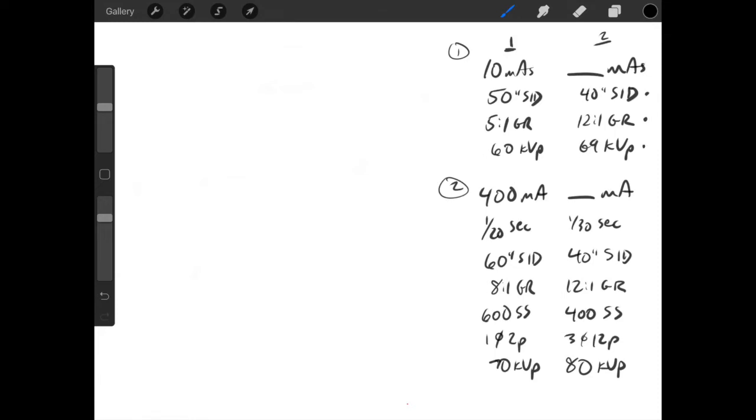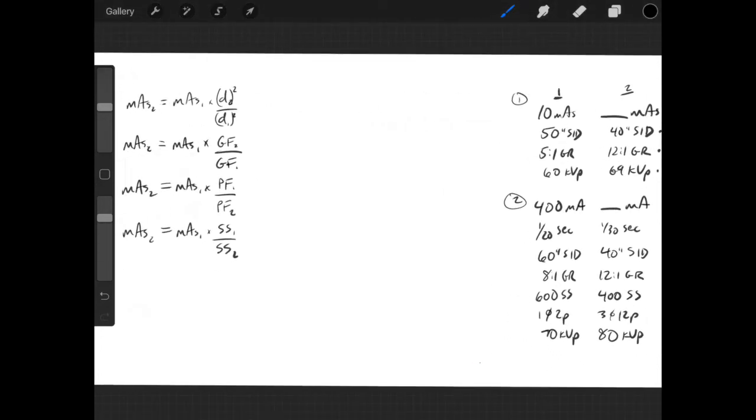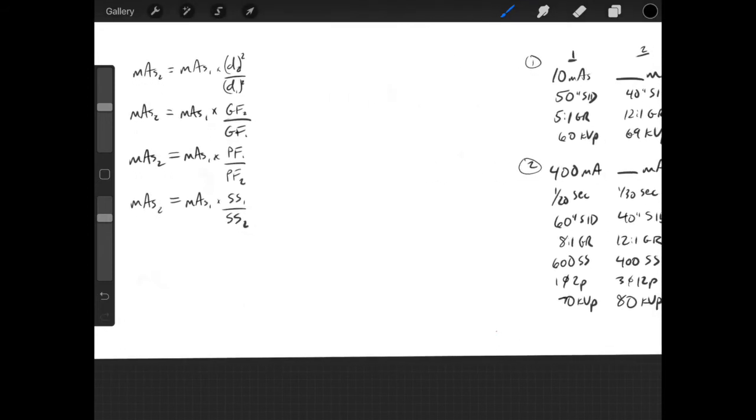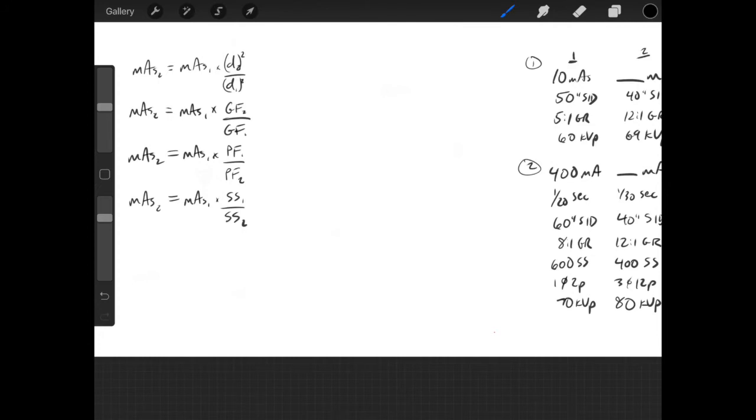So to answer this problem, there's a couple ways. You could do this individually using 10 as your mAs1 and then working out each variable change as a separate equation, or what I prefer to do is to do this in one single equation. For that, you need to have your formulas set up in this fashion here.